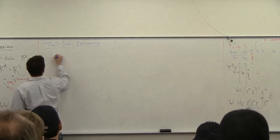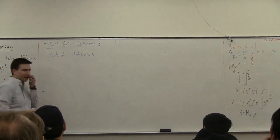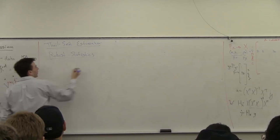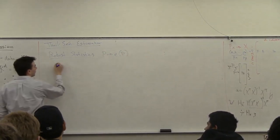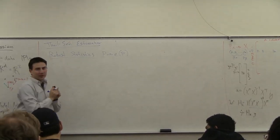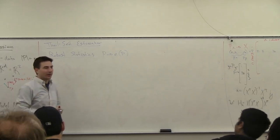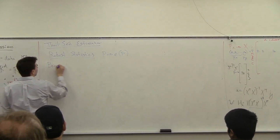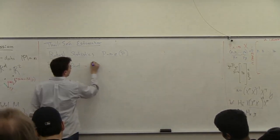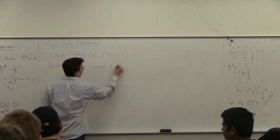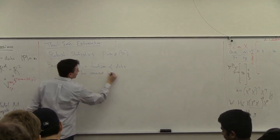In robust statistics, we need to define how robust an estimator is — the notion of a breakdown point. We're going to have some data and get some estimator of this data. What we're going to do is look at what happens as we take some of this data and say these are outliers — taking those data points and moving them off to infinity. The breakdown point is going to be equal to the fraction of data that can be moved to infinity and the estimator is not at infinity.